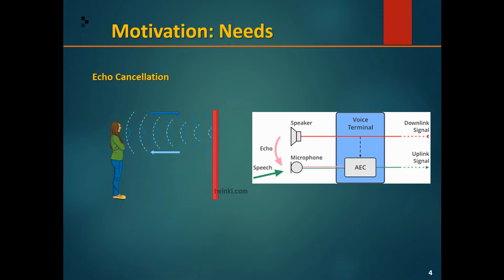Even since the invention of telephones, echo suppression and echo cancellation have been studied subjects. They are commonly called acoustic echo suppression (AES) and acoustic echo cancellation (AEC). Both were studied for a long time; however, they are different methods to solve the same problem. Due to some problems in acoustic echo suppression, acoustic echo cancellation became more popular, and now echo suppressions are often used as part of acoustic echo cancelers.